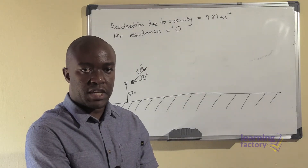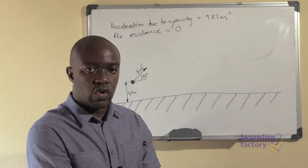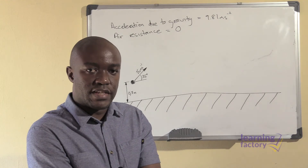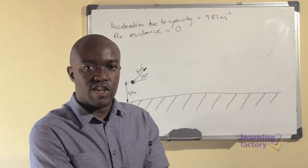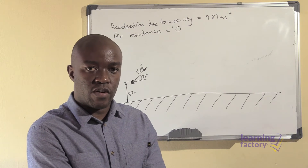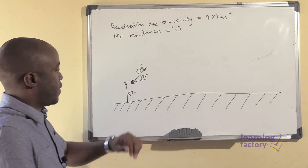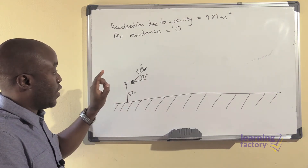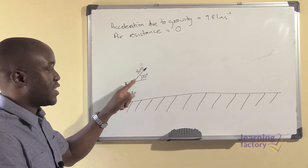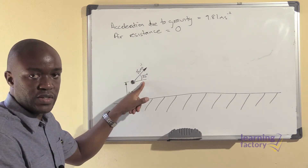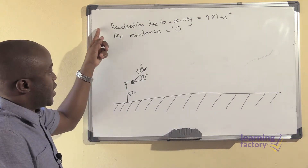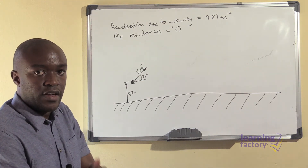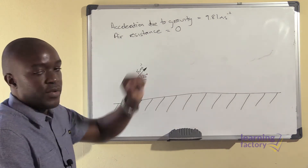When solving problems relating to projectiles, we may be told that there is air resistance or that there is no air resistance. In a situation where there is air resistance, we will often be told the direction that the wind is blowing from. In this situation, we are given a projectile which is thrown from a height of 0.7 meters at a velocity of 16 meters per second at an angle of 35 degrees. We are also told that our acceleration due to gravity is 9.81 meters per square second, and that there is no air resistance.